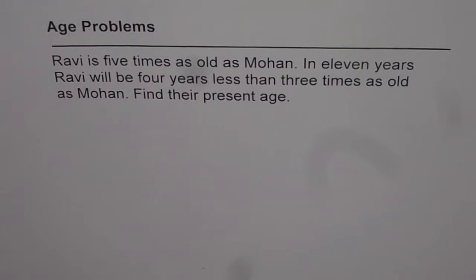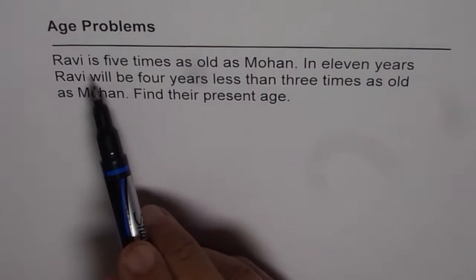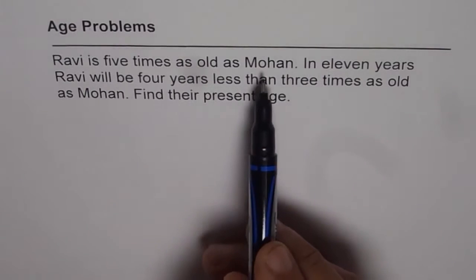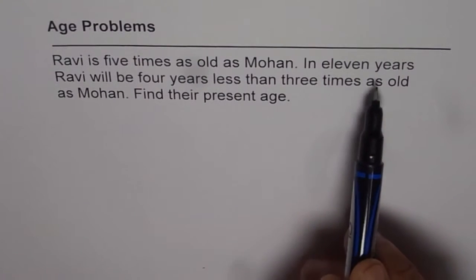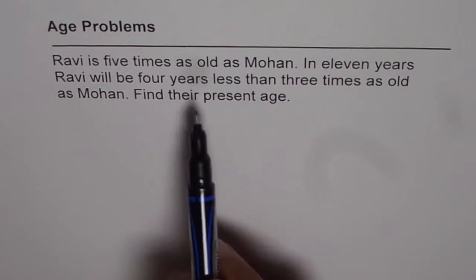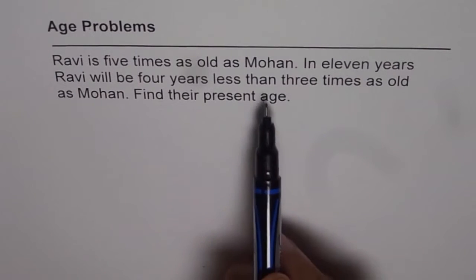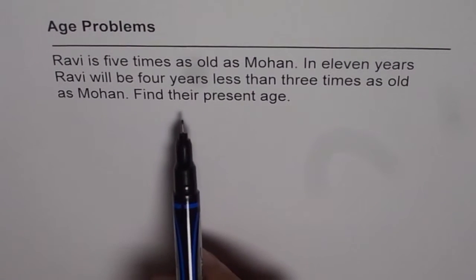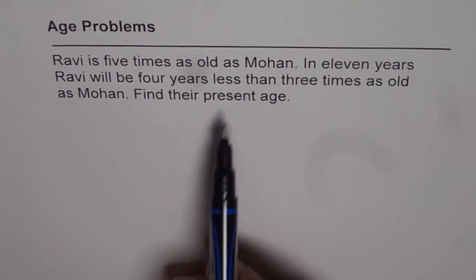I am Anil Kumar and with the help of these videos, we will try to understand how to solve age problems. Ravi is 5 times as old as Mohan. In 11 years, Ravi will be 4 years less than 3 times as old as Mohan. Find their present age.